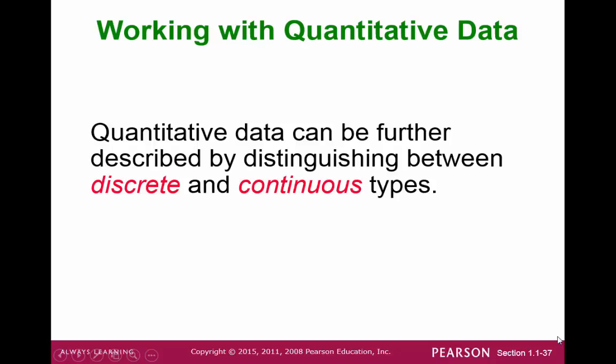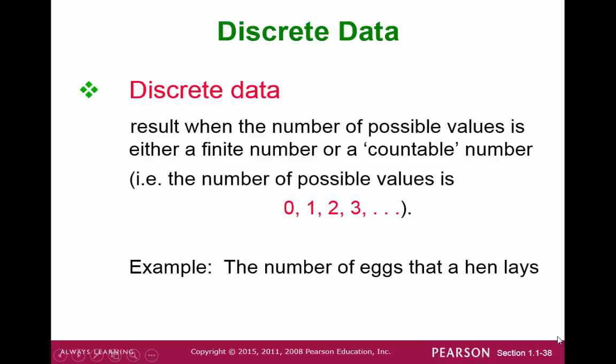Quantitative data can be further broken down into discrete or continuous. A discrete dataset results when the number of possible values is either finite or a countable number — countable meaning we can count 1, 2, 3, etc. For example, the number of eggs that a hen would lay would be a countable or discrete set of values.